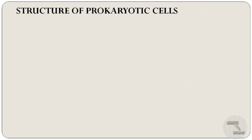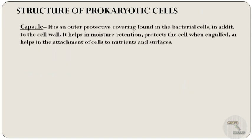Now let's discuss about the structure of prokaryotic cells. The outer protective covering found in bacterial cells, in addition to the cell wall, is called the capsule. It helps in moisture retention, protects the cell when engulfed, and helps in the attachment of cells to nutrients and surfaces. This capsule may also protect against the host's immune system.